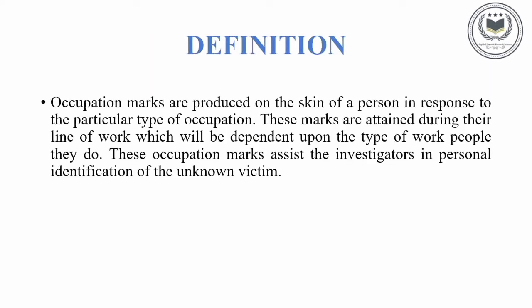Occupation marks are marks produced on the skin of a person in response to a particular type of occupation. Basically, any person having such marks on their skin is mainly due to pursuing the same type of work on a regular basis. For example, when we look at a washerman's hand, the palmar surface of the hand always appears in a shrunken manner, mainly caused due to their type of work.